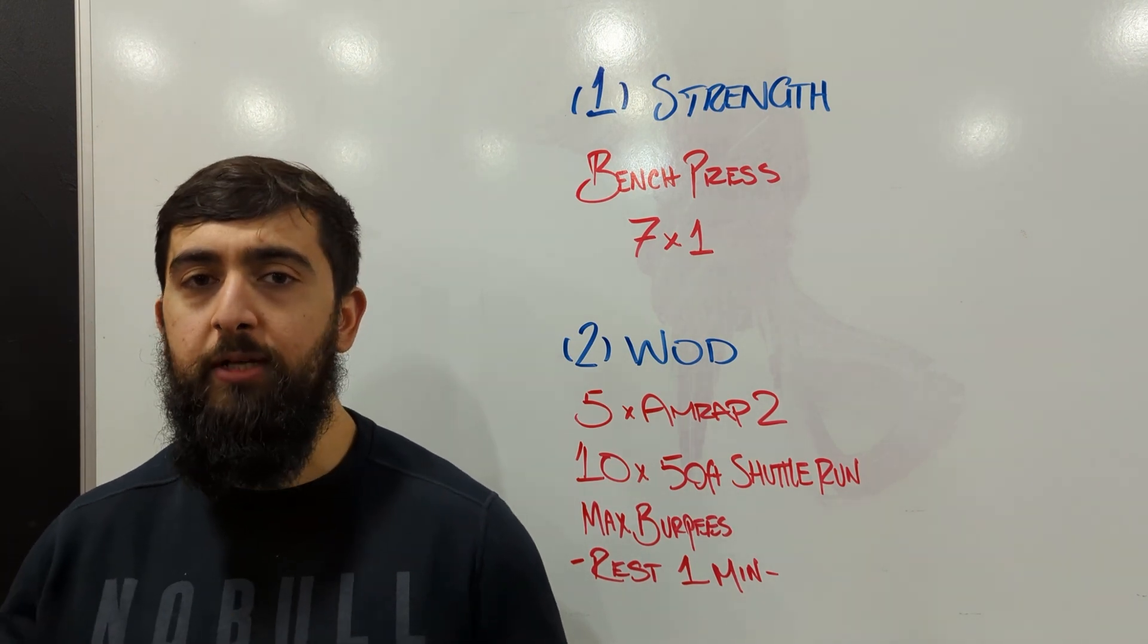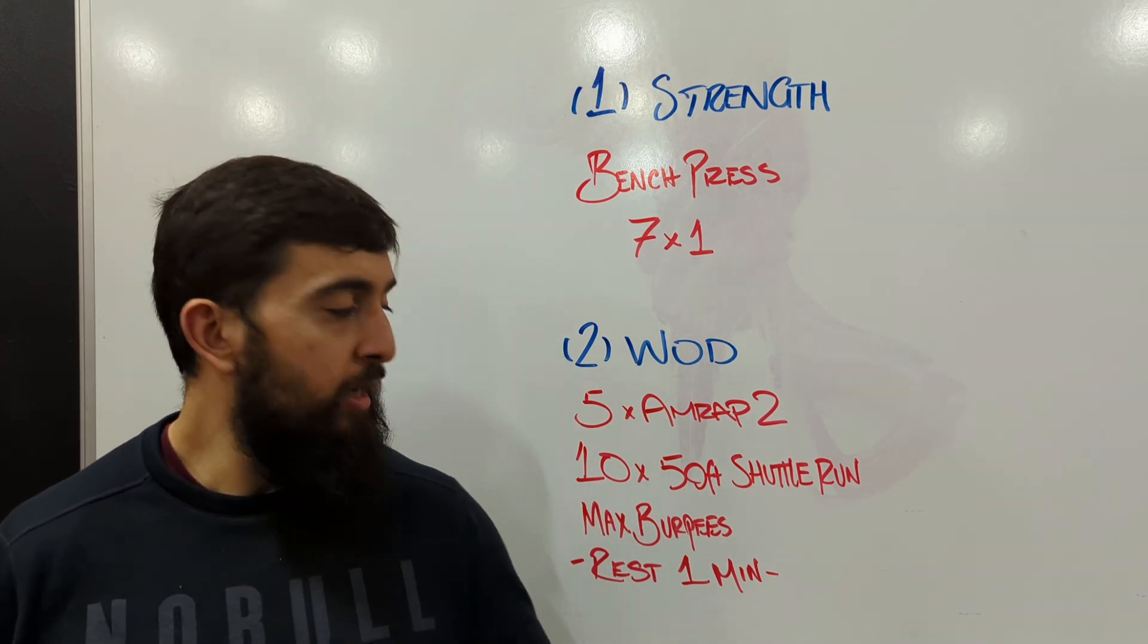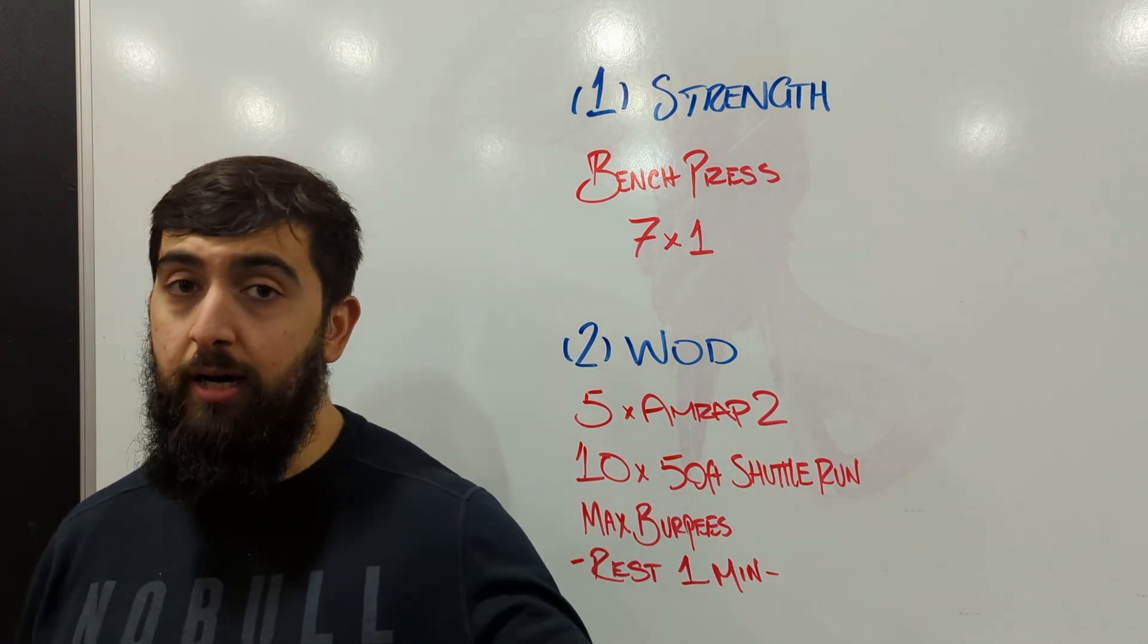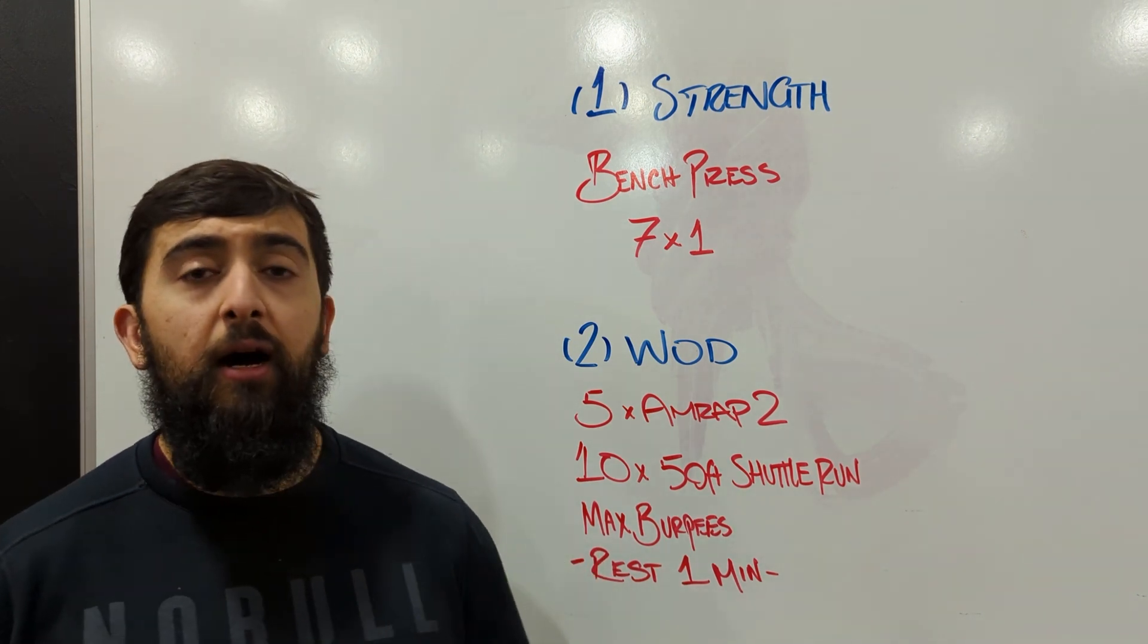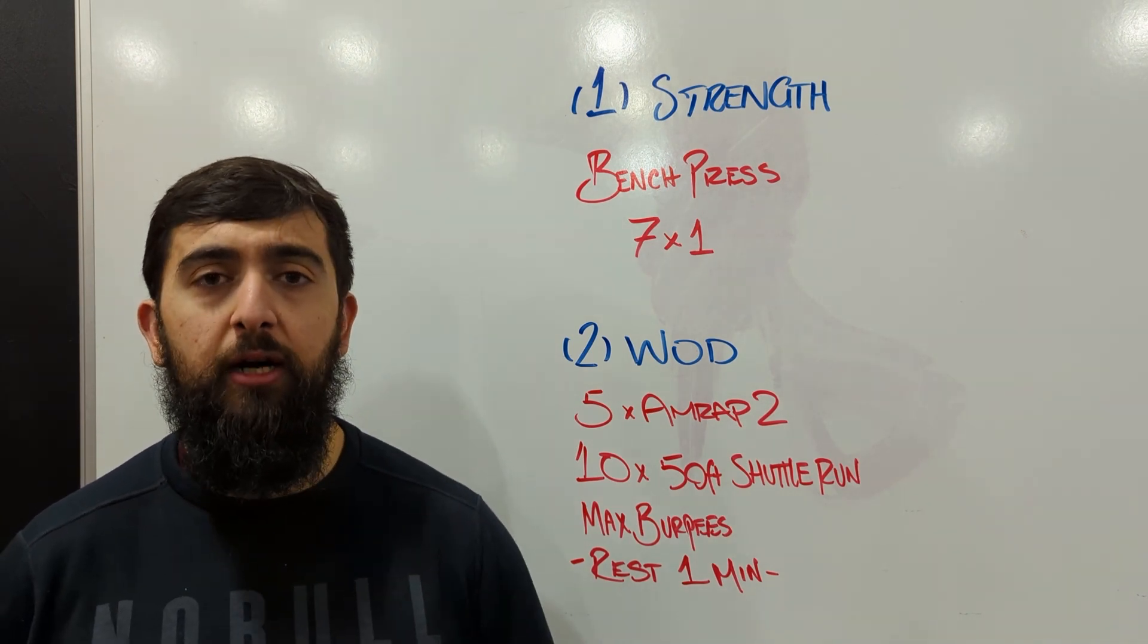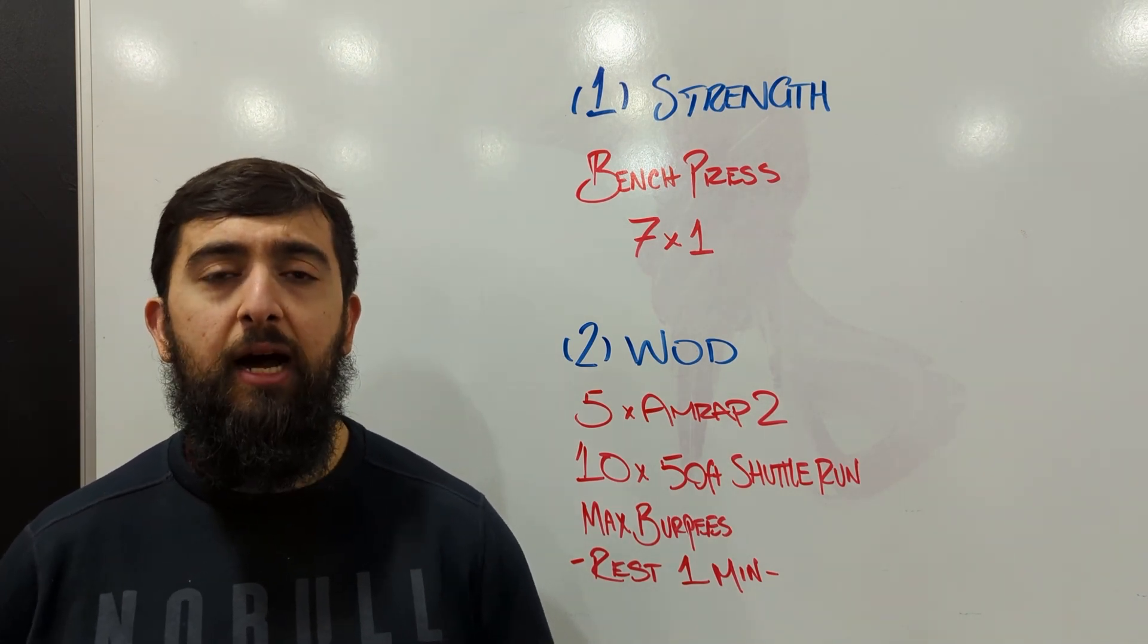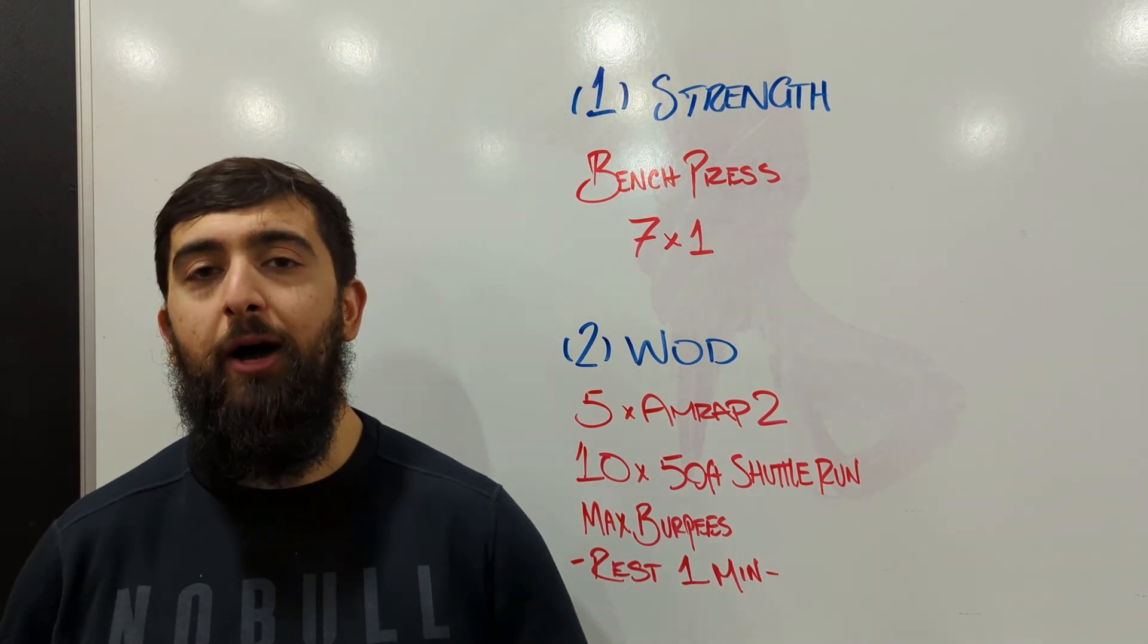So let's say we get 10 reps every round. Last round, we want to try to aim and get 11 or 12 reps. I think 10 might be on the higher end here. Let's aim anywhere between 5 to 10 reps for the burpees. If you can get more, perfect, keep pushing for it. But 5 to 10 is the average range that I would estimate that most people will get to on every round.